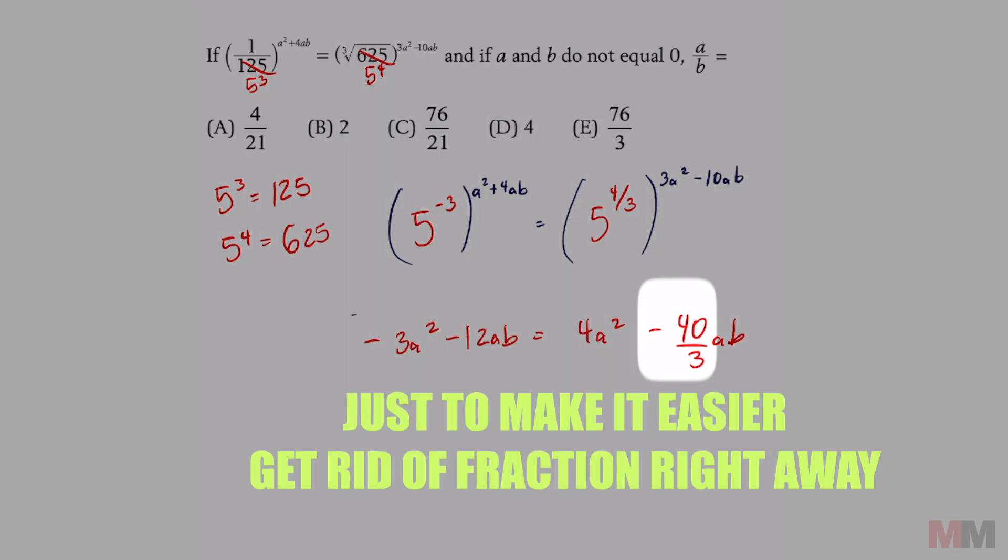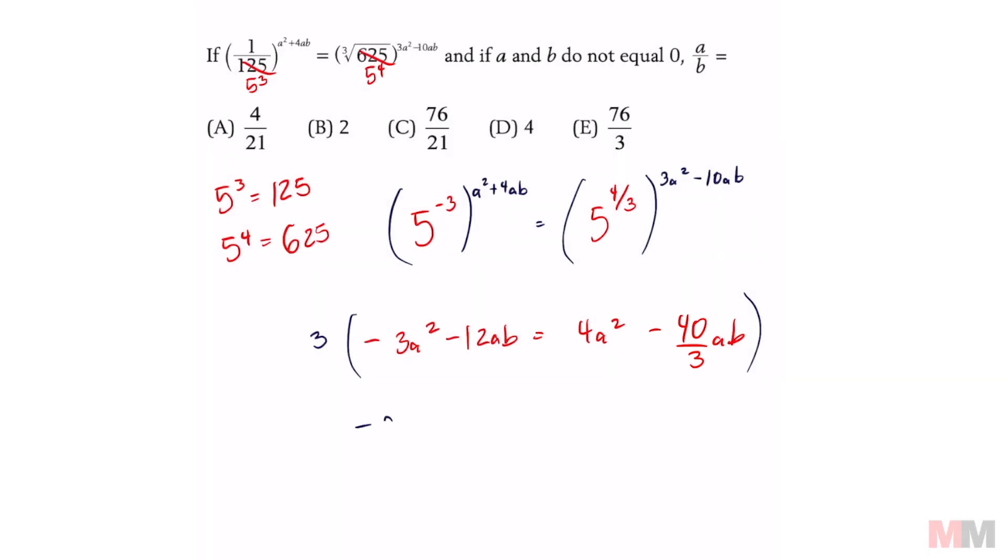This is just my preference. I like to get rid of the fractions right away. And we can do that by multiplying the whole equation by three. That will get me negative nine a squared minus 36 a b equals 12 a squared. And the threes are going to cancel out to get me negative 40 a b.